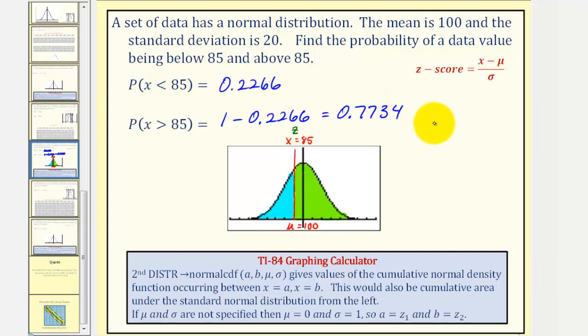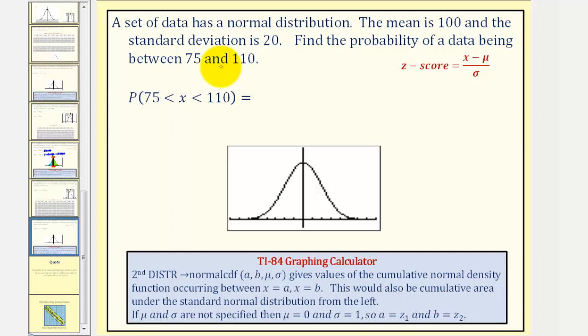Now let's take a look at a second example. Here much of the information is the same. We have a normal distribution, the mean is 100, and the standard deviation is still 20. But now we want to find the probability of a data value being between 75 and 110.